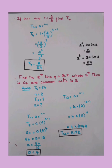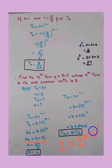To find a, use Tₙ = a·r^(n−1) with n = 5: T5 = a × 2^(5−1) = a × 2⁴. Substitute T5 = 64: 64 = a × 16. Rearranging, a = 64/16 = 4. We now have a = 4.